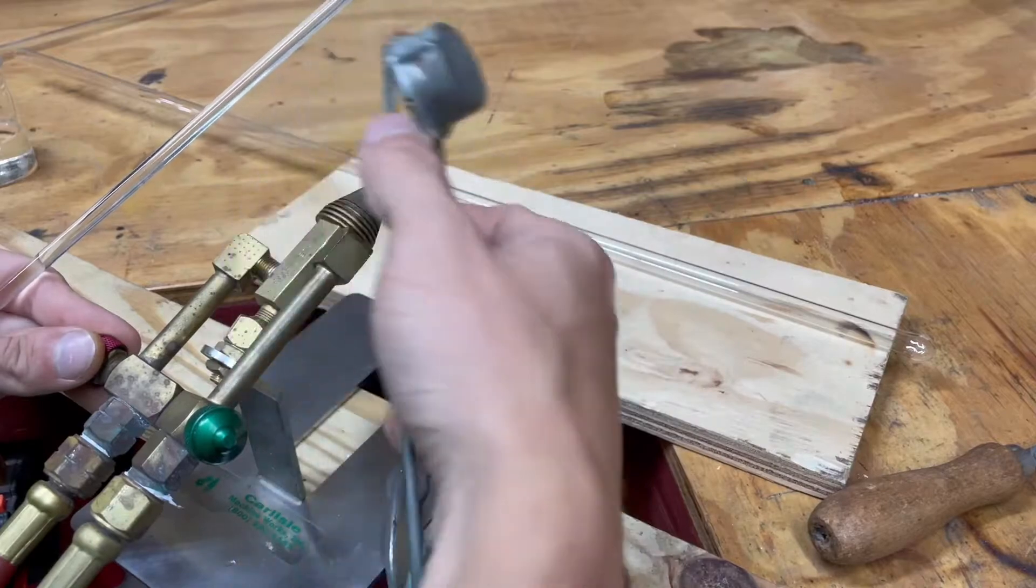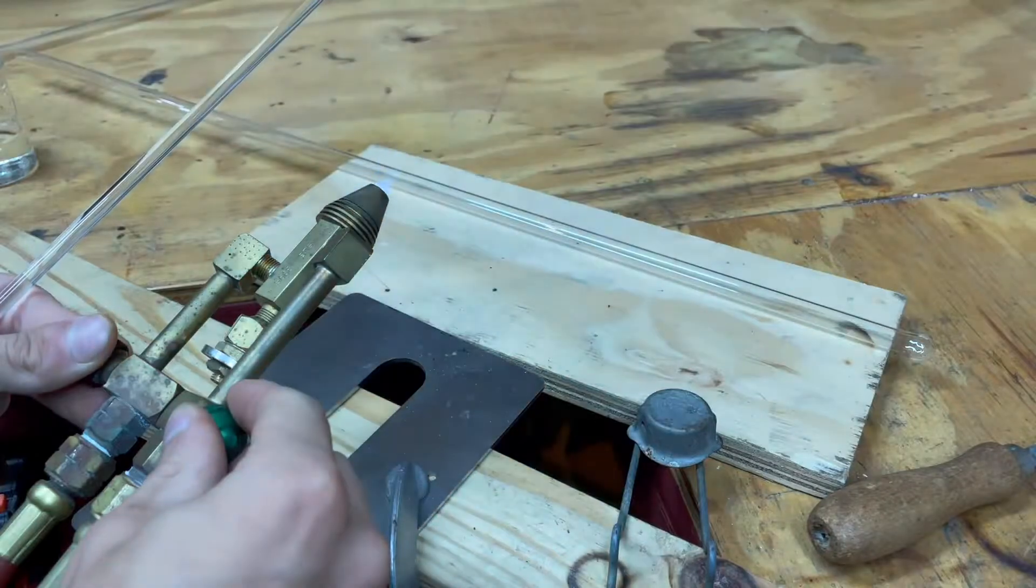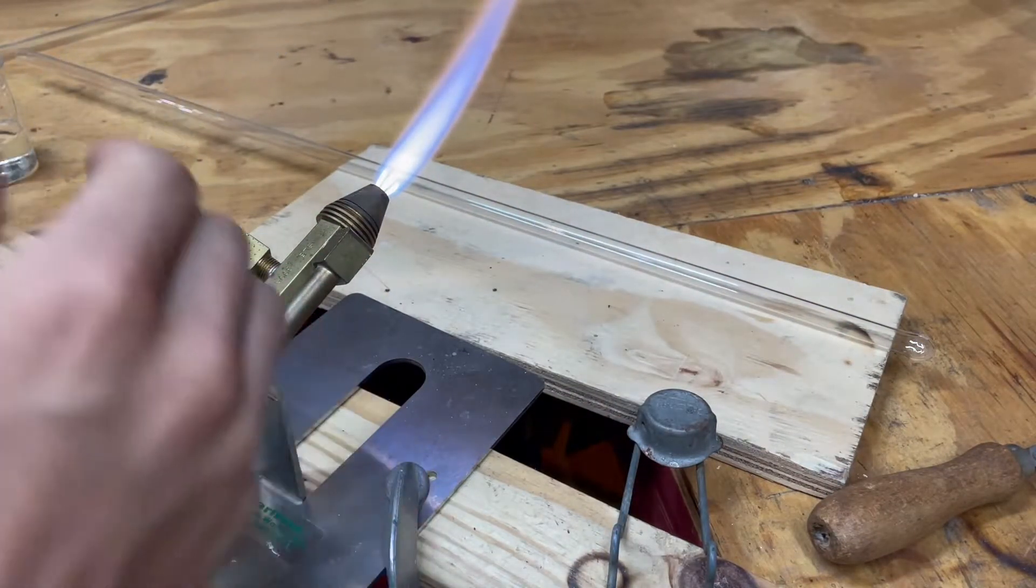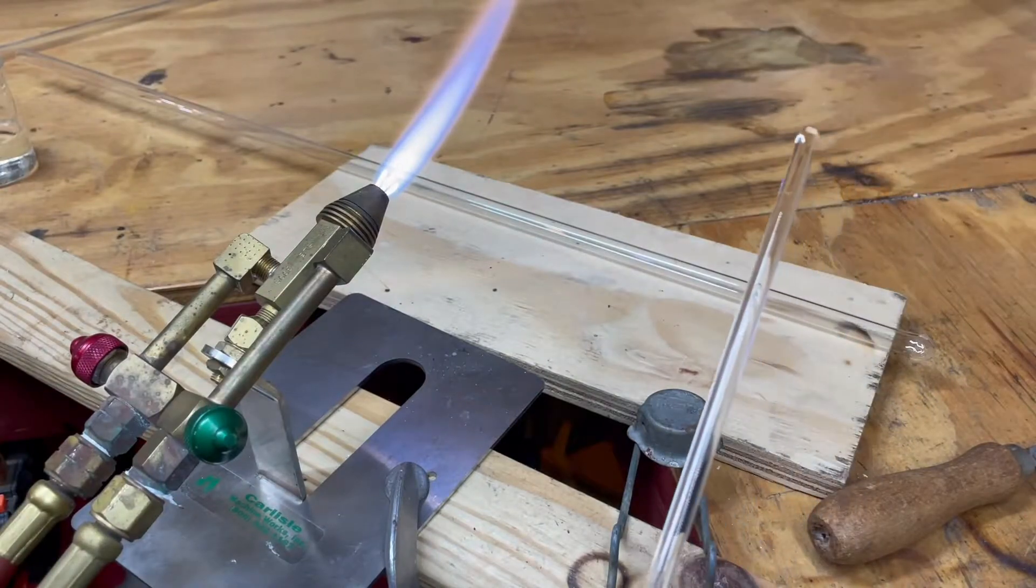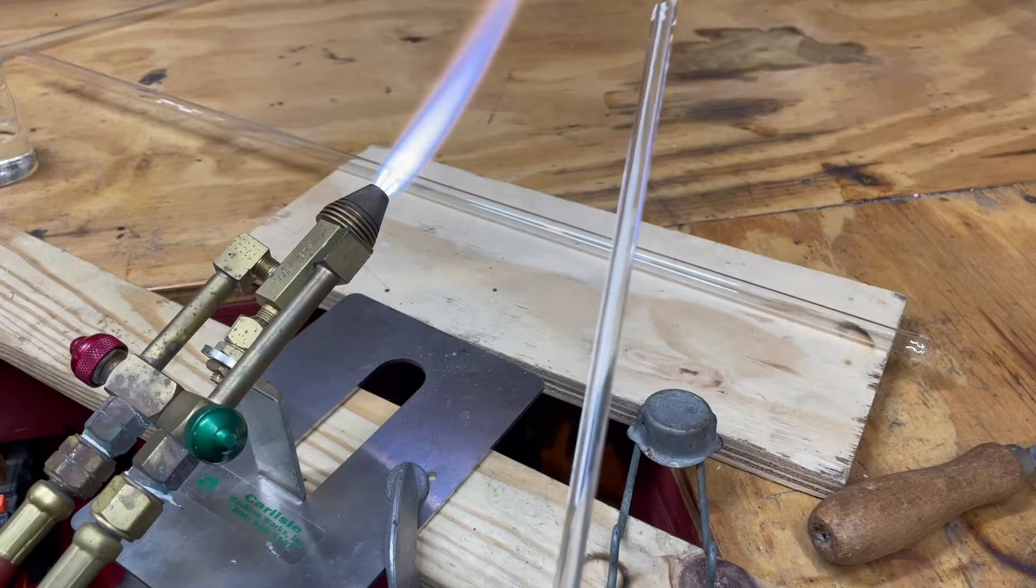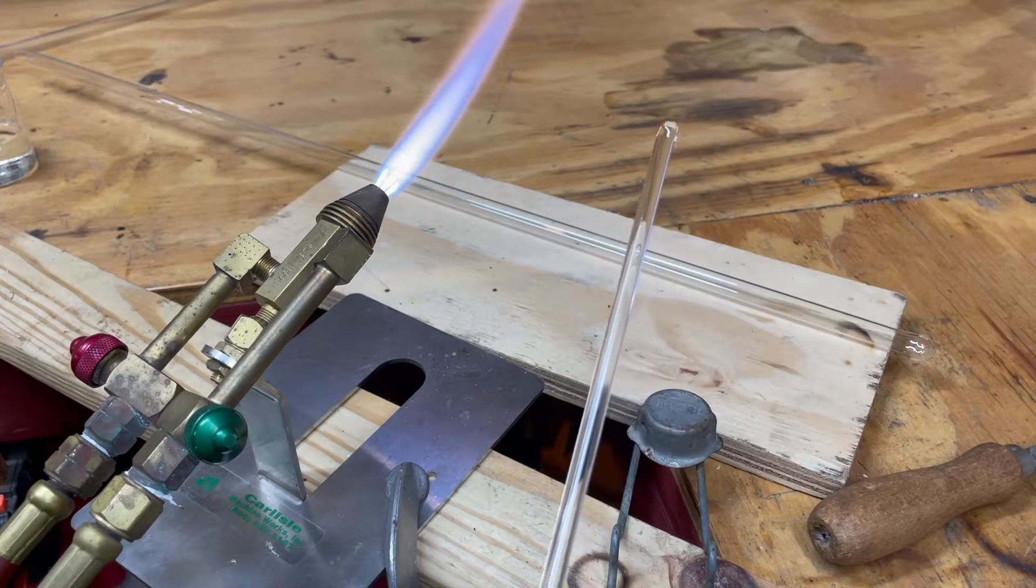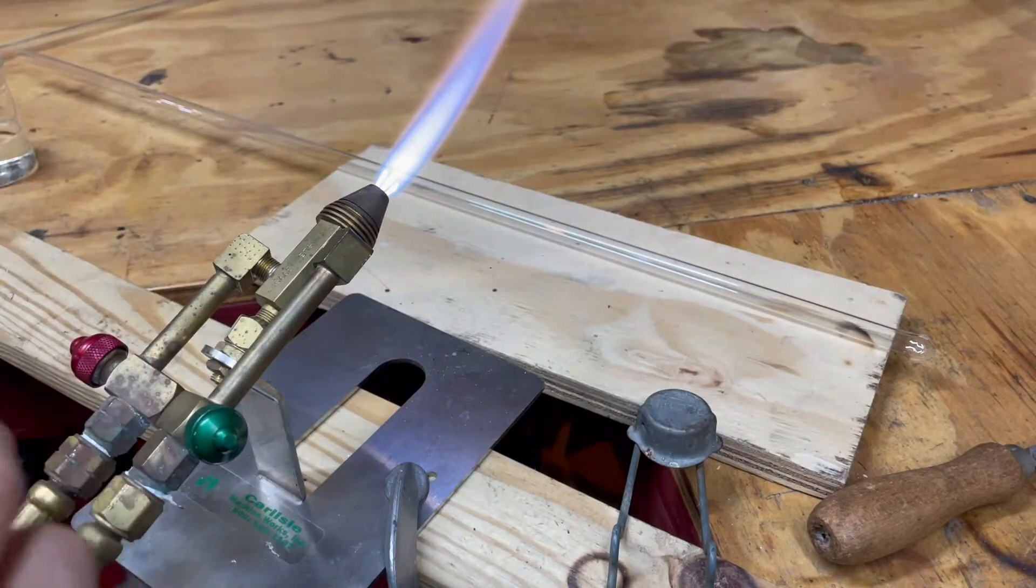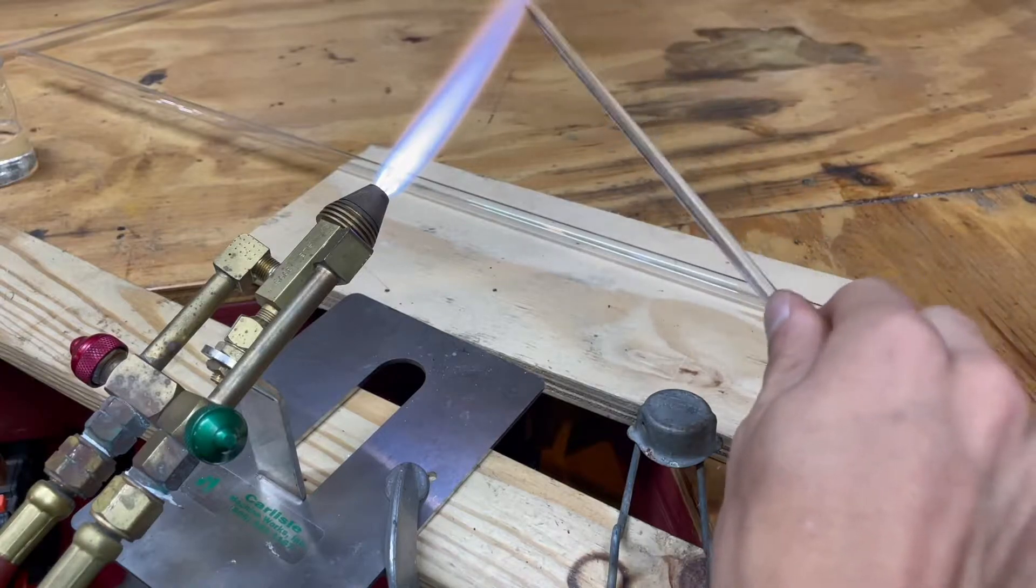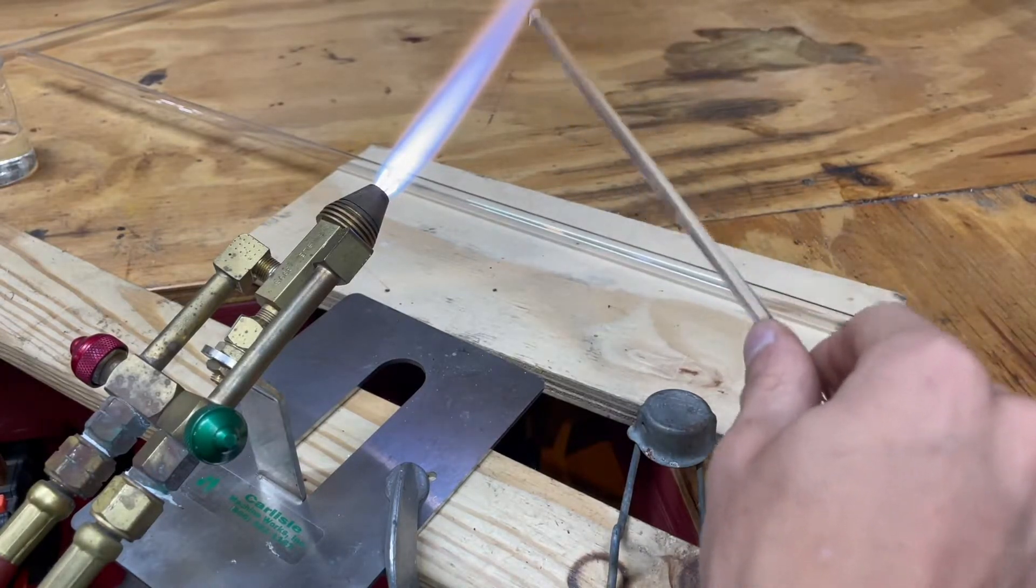For this you're just going to easily light the torch, get a nice flame glowing, and slowly add your rod to it. With glass it's a great insulator so the outside will melt but the inside will stay solid. This will cause the glass to crack and explode. So you're going to want to add it nice and slowly while rotating the glass. And start at the top and pass it in and out of the flame, slowly warming it up.